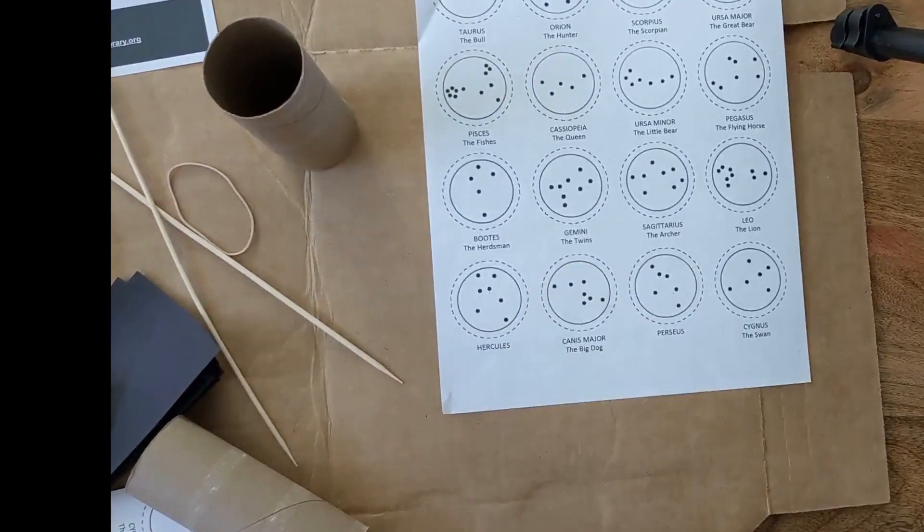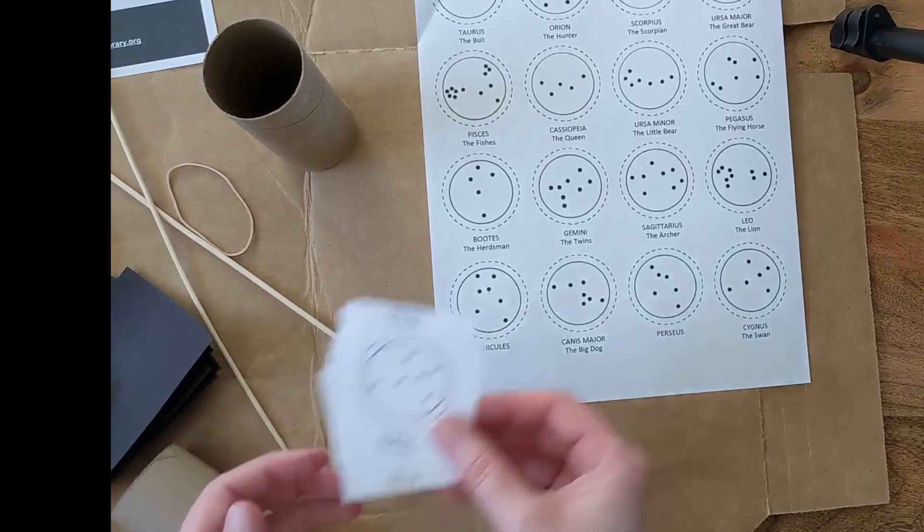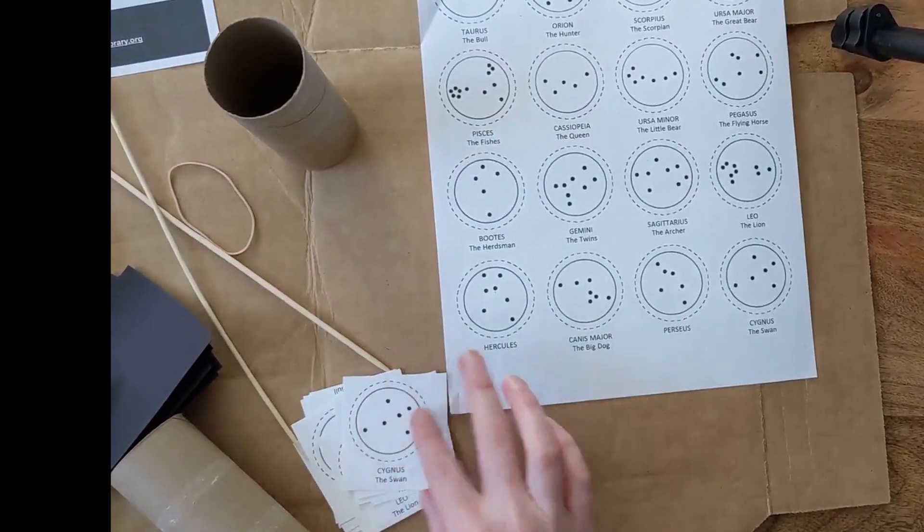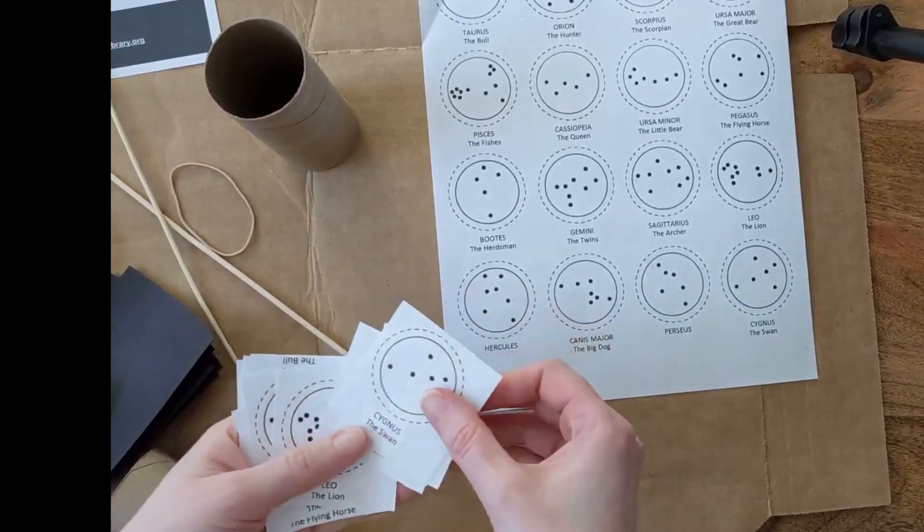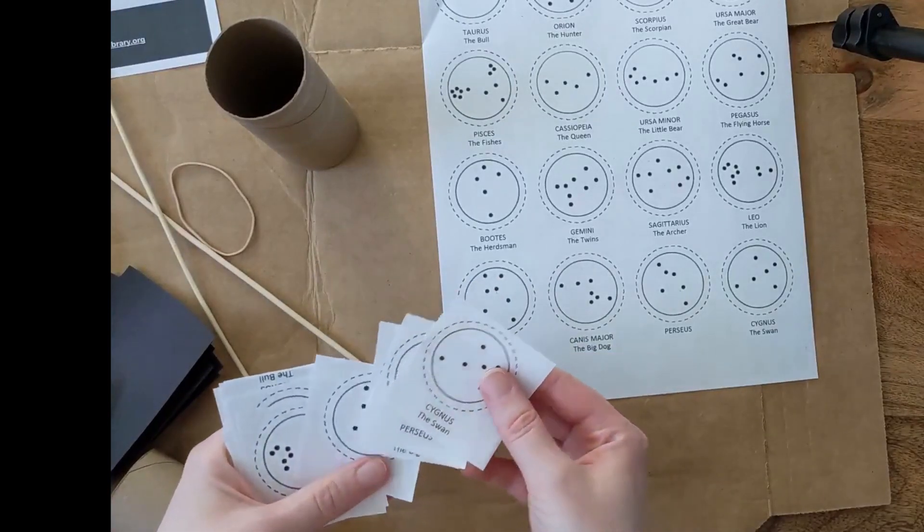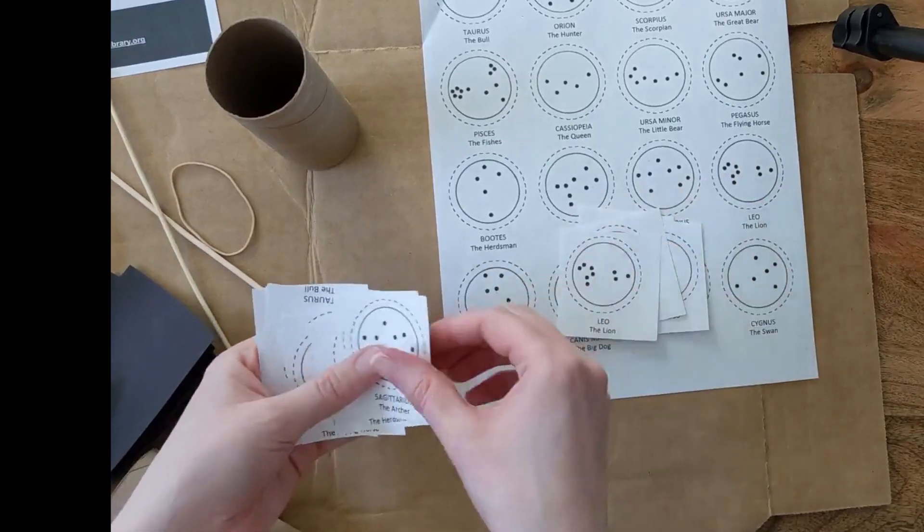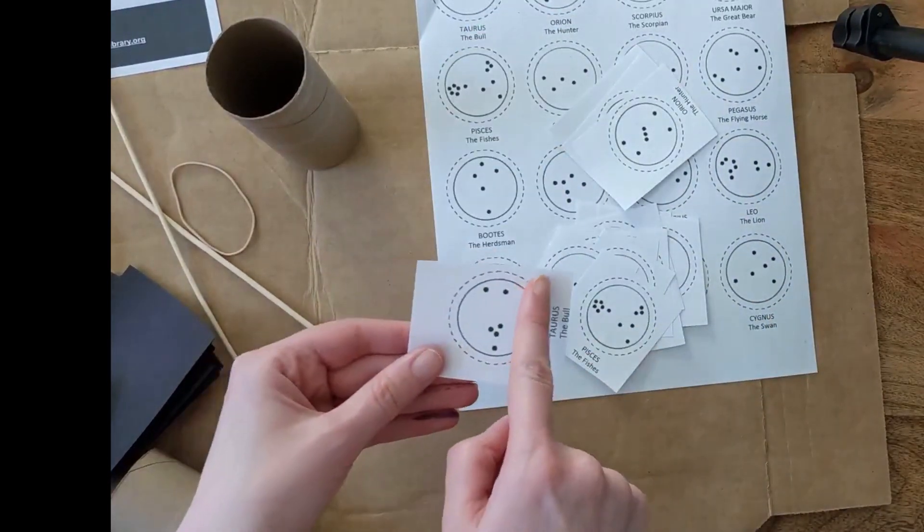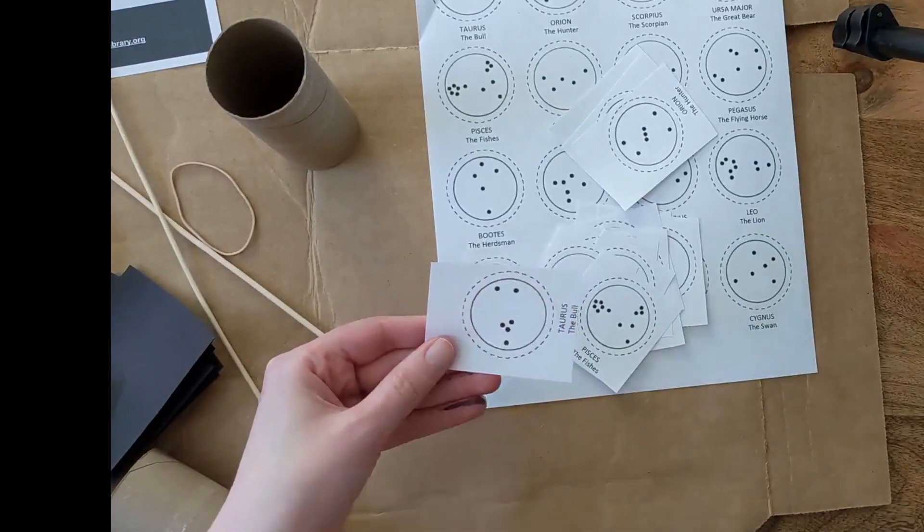And then you're going to want to have this and you're going to want to cut out the individual items. Now I just roughly cut them out because I hadn't quite decided what I was going to do. But now I know I'm going to do Taurus so I'm going to look for that one. There we are. So you're just going to want to cut out along the dotted line.